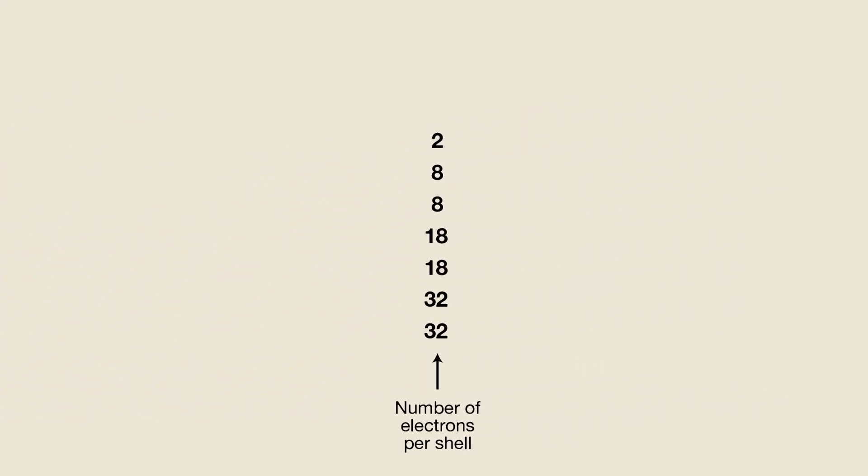But there's more. Each shell can have up to four subshells. These four subshells are called S, P, D, and F and can hold 2, 6, 10, and 14 electrons respectively. Note that 8 equals 2 plus 6, 18 equals 2 plus 6 plus 10, and 32 equals 2 plus 6 plus 10 plus 14. I'll give you a second to let this deeper pattern sink in.